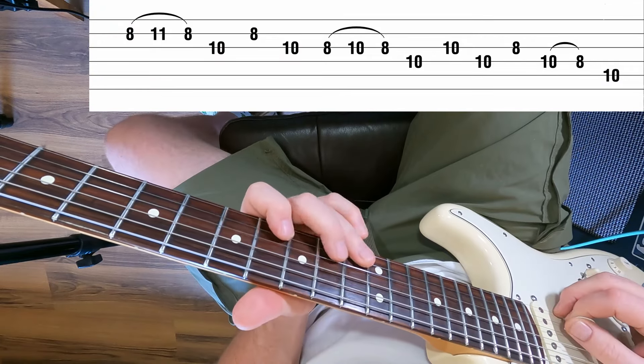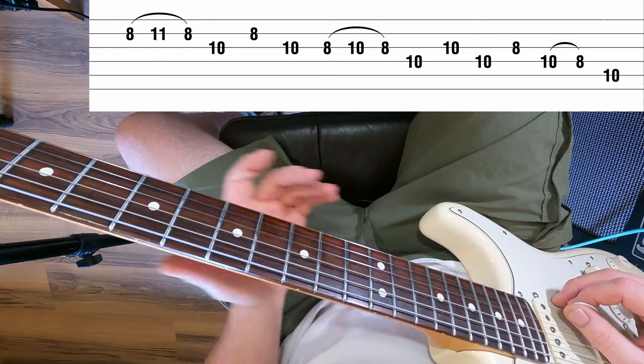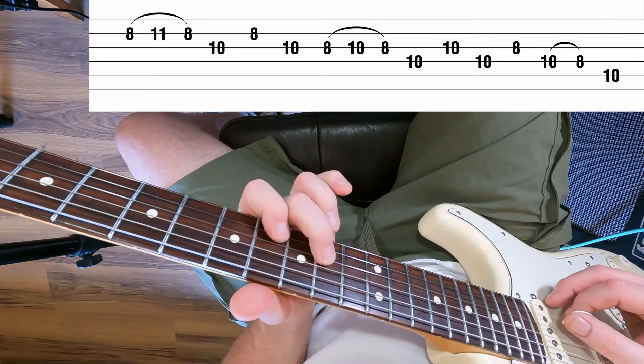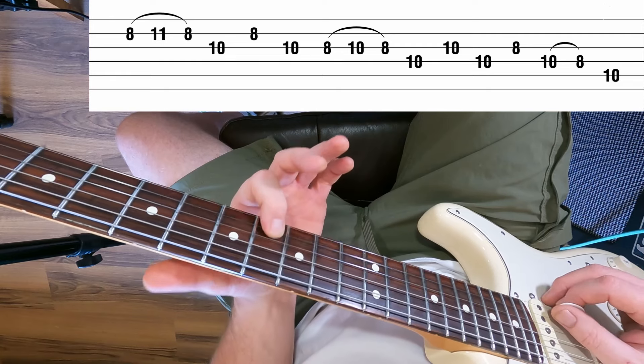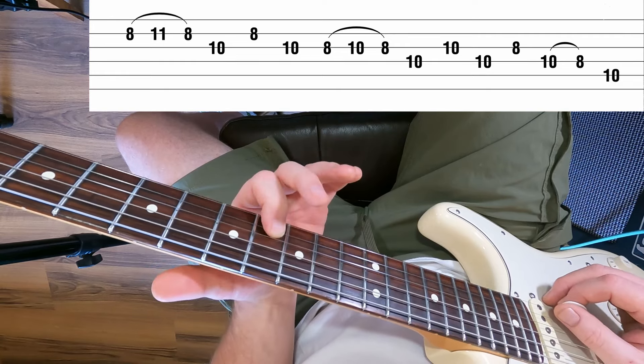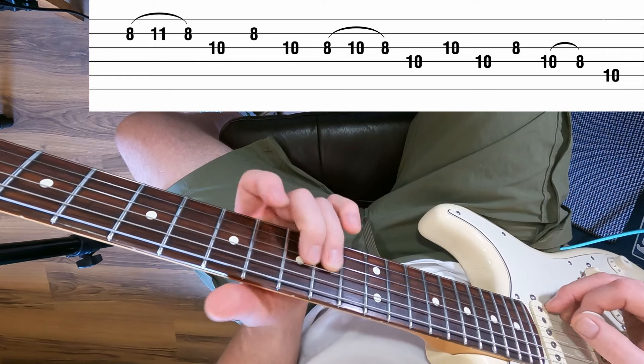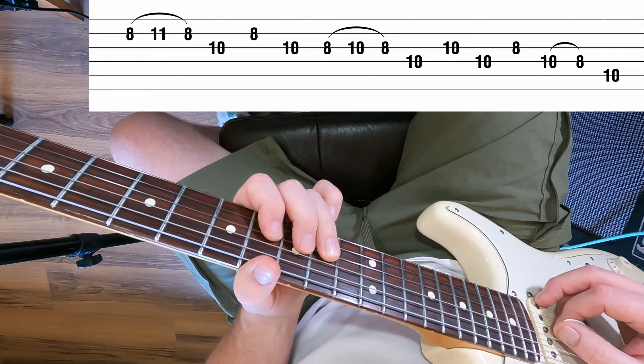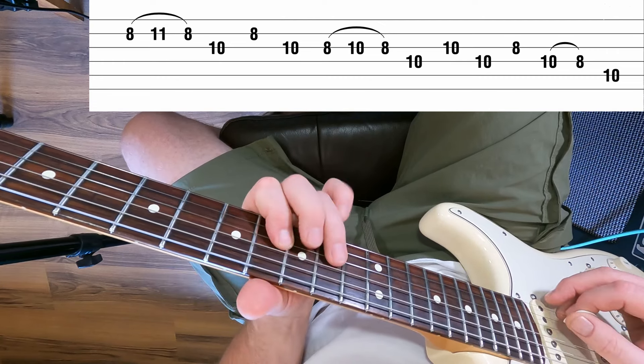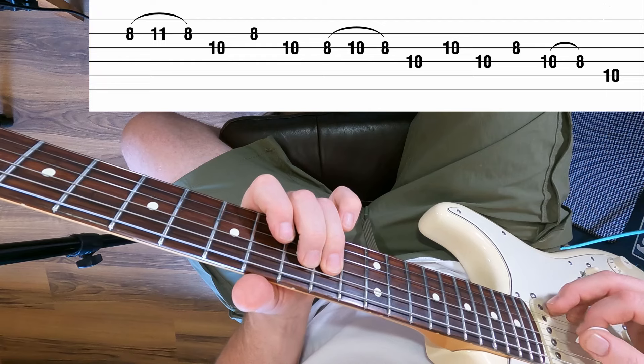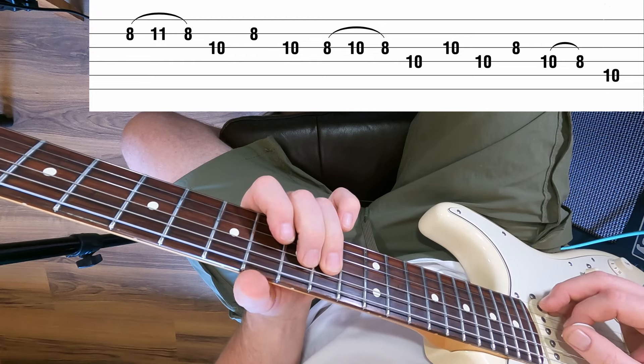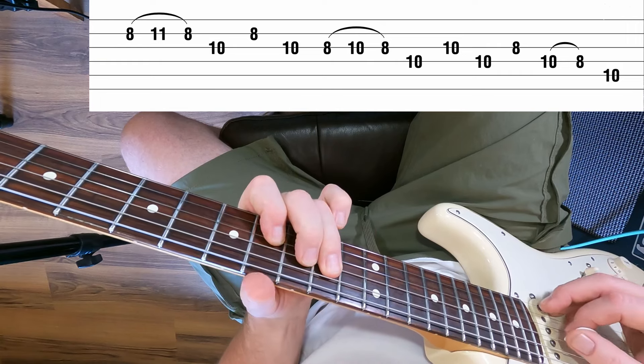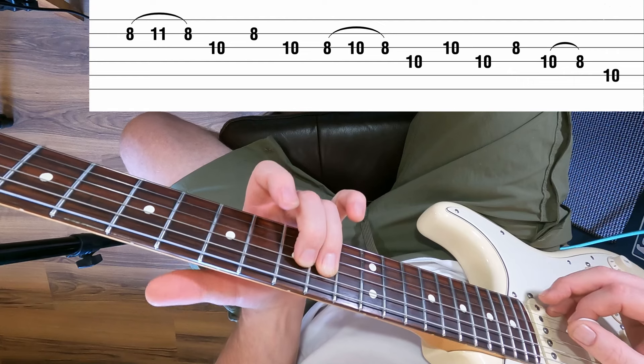There's that hammer-on pull-off, that's the first part of the lick. I'm going to split this into three. When we get back to the B string on the eighth fret, we're going to come back to the 10th fret on the G, then do another hammer-on pull-off, this time 8 to 10 on the G, then over to the 10th fret on the D string.